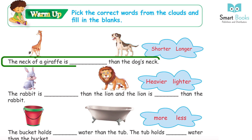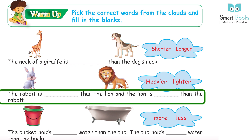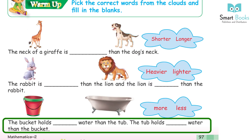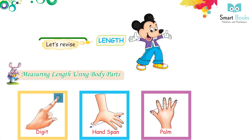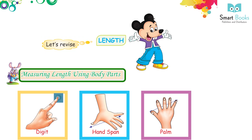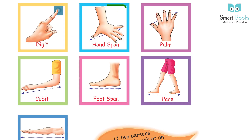Warm up: Pick the correct words from the clouds and fill in the blanks. The neck of a giraffe is longer than the dog's neck. The rabbit is lighter than the lion, and the lion is heavier than the rabbit.